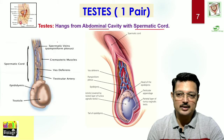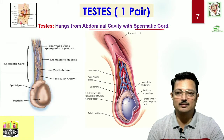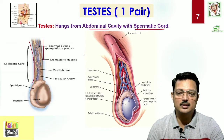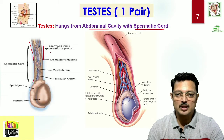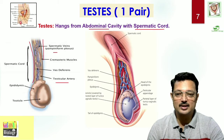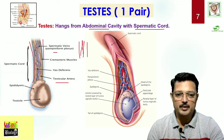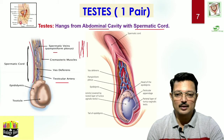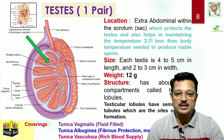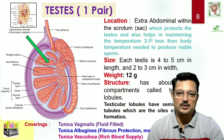The spermatic cord connects the testes to the abdominal cavity. It is made up of certain coverings called tunica, and within it you will find spermatic veins and testicular arteries — just like wire is protected under casing, the spermatic cord is like a casing. The spermatic cord is made up of certain layers: the tunica vaginalis, the tunica albuginea, and the tunica vasculosa.